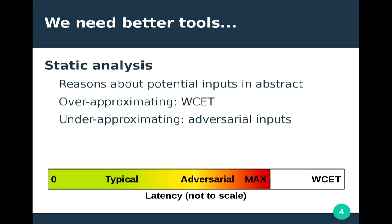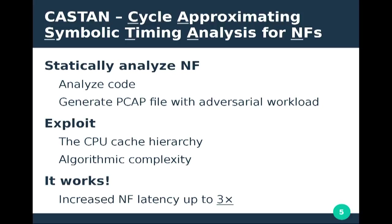I propose CASTEN — Cycle Approximating Symbolic Timing Analysis for Network Functions. As a static analysis, it takes as input the code of the network function itself and generates a PCAP file with the adversarial workload. You can then use this PCAP file with a profiler or any other existing tools to debug your performance issue and hopefully fix it.